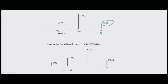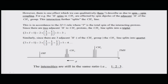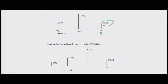Protons with their electron cloud removed (deshielded) move further away from the TMS reference point; those with less deshielding stay closer. For ethanol (CH₃CH₂OH), the CH₃ protons are closer to TMS than the OH protons. The ratio of line intensities is 3:2:1 for CH₃:CH₂:OH, corresponding to the number of protons in each group.